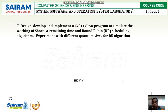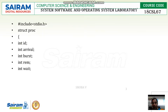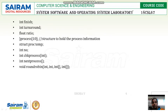We are going to develop and implement a program to simulate the working of shortest remaining time and round robin scheduling algorithms, with a quantum size for round robin. In the coding part, we have the standard input-output library and we are using a struct type structure named 'proc'. The variables are: int id, arrival, burst, remaining, and waiting time.